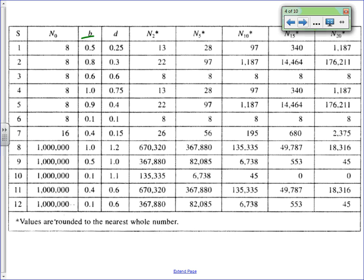So as we look at birth rates and death rates: birth rates are going to cause our initial population to go up. The more births that happen as generations go on, the population grows. Whereas death rates cause our population to decrease. If the birth rate is higher than the death rate, the population increases. If birth rate is less than death rate, the population decreases. If they're equal, the population stays exactly the same — just as many things being born as are dying.